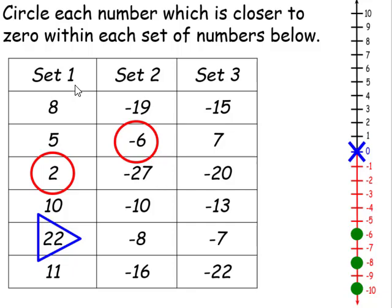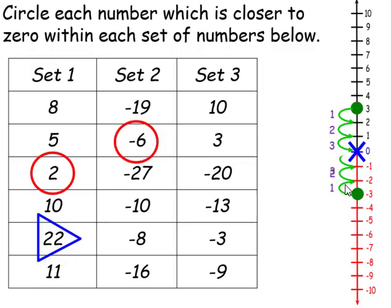But when we take a look at set number 1, all the numbers were positive. Set number 2, all the numbers were negative. Now we have positive and negative numbers in set number 3. When we're trying to find the number that's closest, we might say 3, but take a closer look at negative 3. So which one's actually closer? When we take a look at 3, that's 3 units away from 0 above. When we take a look at negative 3, that's 3 units away from 0 below. Therefore, both numbers are the same distance away from 0. We have two answers, because 3 and negative 3 are both 3 units away from 0.